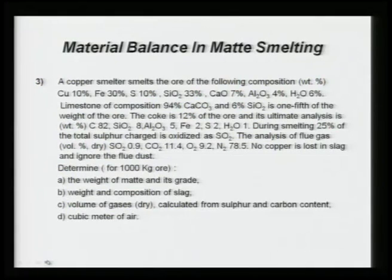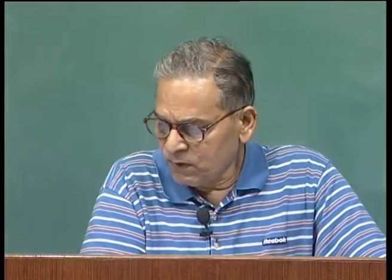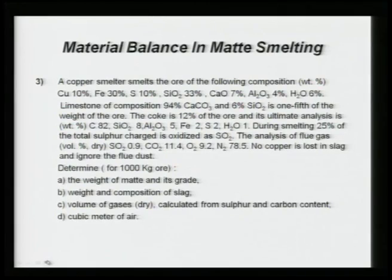The analysis of flue gas is given as volume percent dry: SO₂, CO₂, O₂, and nitrogen. This is a dry analysis. Volume percent is the common way of giving the analysis of flue gases, though weight percent can also be used. No copper is lost in slag, and the flue dust is to be ignored — whatever elements the flue dust carries, you ignore those.